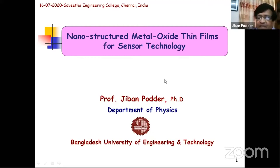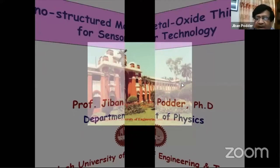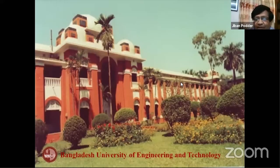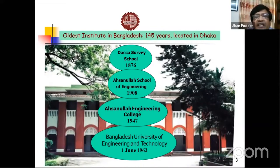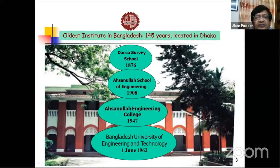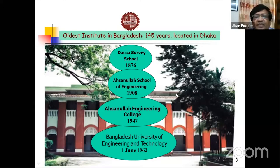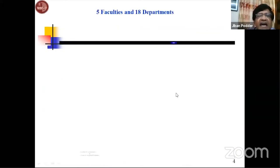BUET's first journey started in 1876 as the Dhaka Survey School, then became the Ahsanullah School of Engineering in 1908, Ahsanullah Engineering College in 1947, and finally became a full-fledged university on June 1962 as Bangladesh University of Engineering and Technology. BUET has five faculties and 18 departments, approximately 600 faculty staff, and 7,500 students on campus.